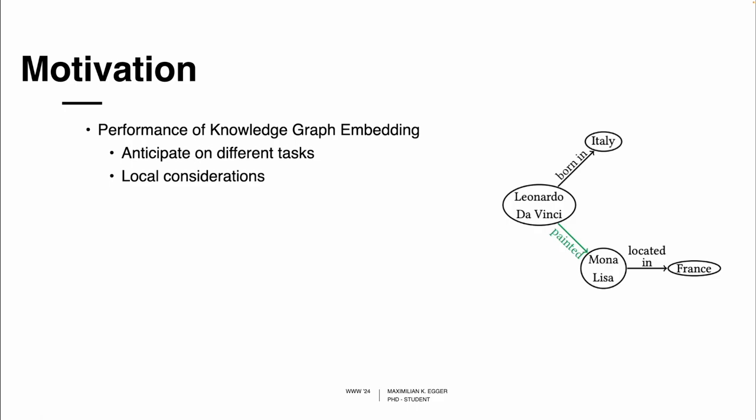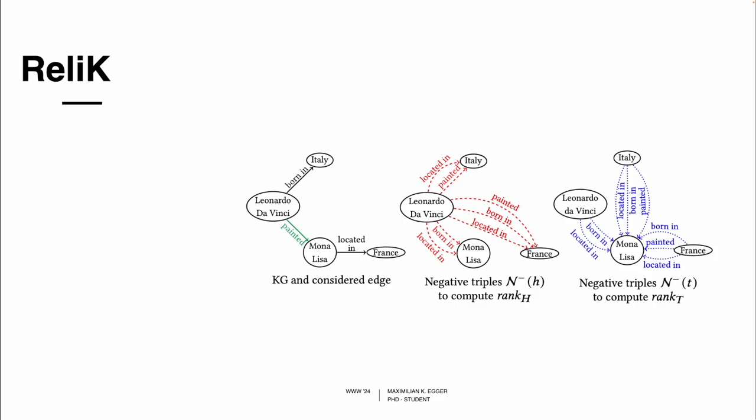So there is a need and interest to have a task independent measure that you only need to compute once, as well as a locality aspect due to the differences that you can have among the subgraphs, which we will answer with our metric Relic.